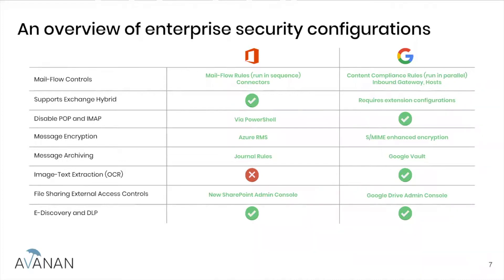Both of them allow you to disable POP and IMAP if you don't want your users to use custom mail clients. For message encryption, the big difference between Azure RMS and S/MIME enhanced encryption is that Azure RMS is a click of a button. If you use the default configurations, you essentially let Microsoft host the encryption key. So Microsoft does potentially have access to that email — it's not end-to-end encryption, but it integrates directly into their security capabilities so they can still scan the email even though it came in encrypted.